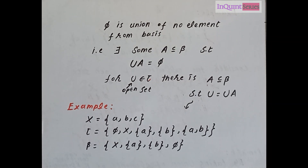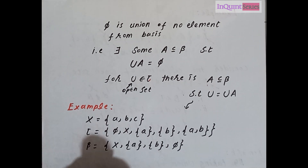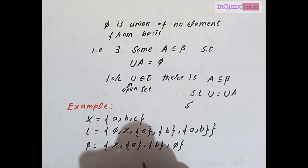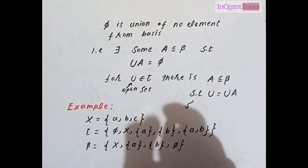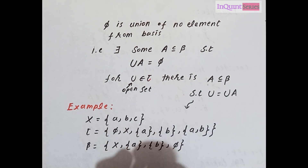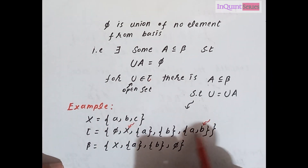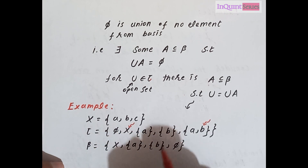Let's take another example with a set of three elements and a topology on that set. In the basis we have taken, we include x and phi as well, along with the singletons {a} and {b}. We can check that this beta forms a basis for that topology. The elements x, {a}, {b}, and phi are all from the topology, so they are open. The other elements of the topology, namely {a, b} and x, can be written as unions: {a, b} is the union of {a} and {b}, and x is the union of x with {a}, or x with {b}, or x with phi.